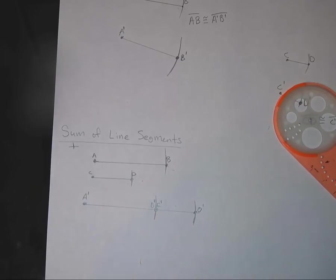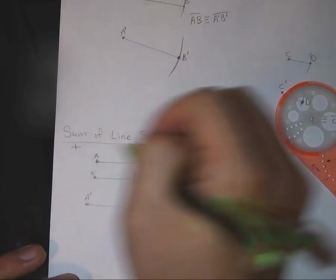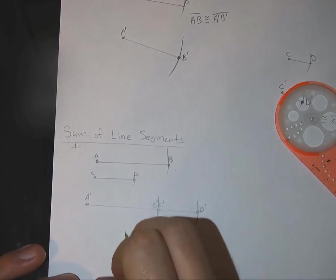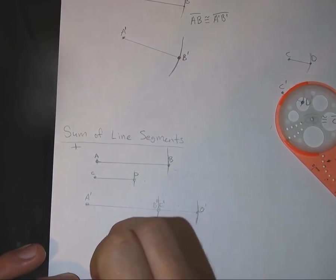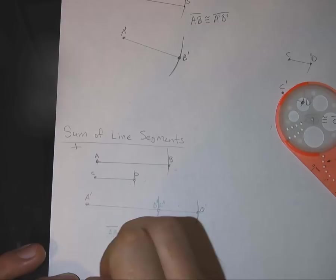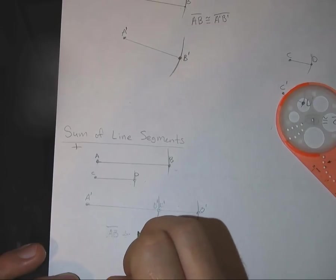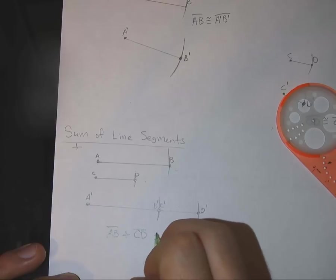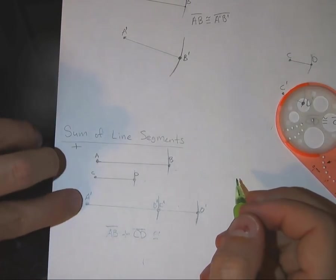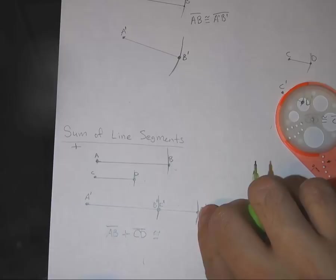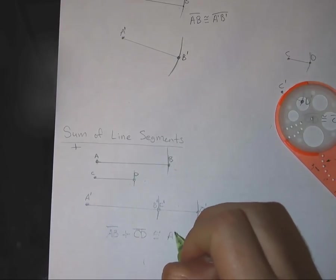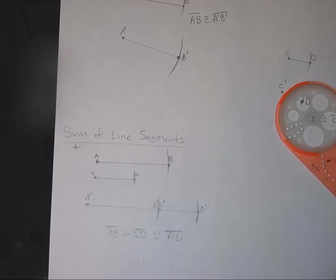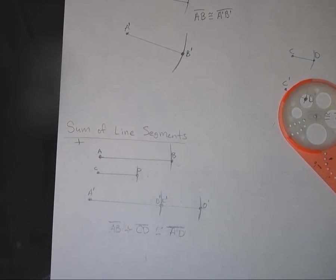Now, there's some notation that goes along with this. Because we're talking about sums, we're talking about adding two line segments. And we took the line segment AB and CD. We add those together to get the line segment to this full one, A prime D prime. And that is how we add two line segments together.